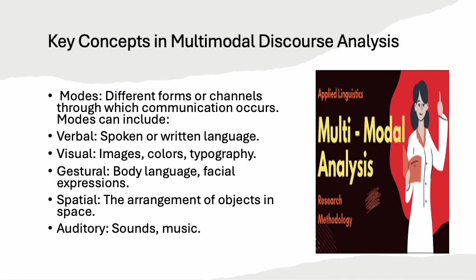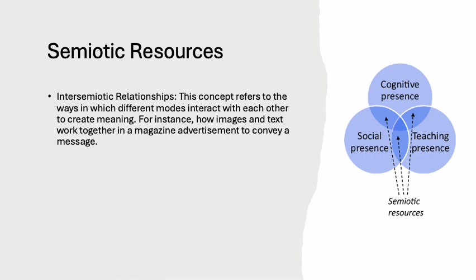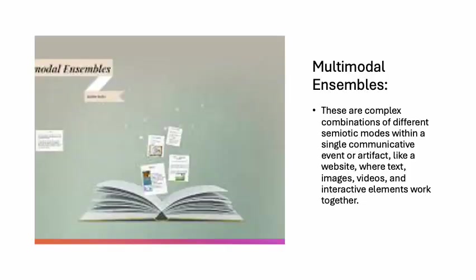Among these, semiotic sources should be especially considered. Semiotic sources have two types of relationships. One is their internal relationship — how they interact with each other to create meaning. For example, look at images and text and see how they interact to create meaning: the relationship, the dependence, or the interdependence, and how one affects the other. There are also multimodal ensembles, which refers to how these modes group together on any page, picture, or write-up.